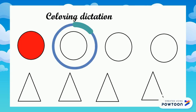Now let's see the color black. Color circle number 2 black. Circle number 2 is black. Good job.